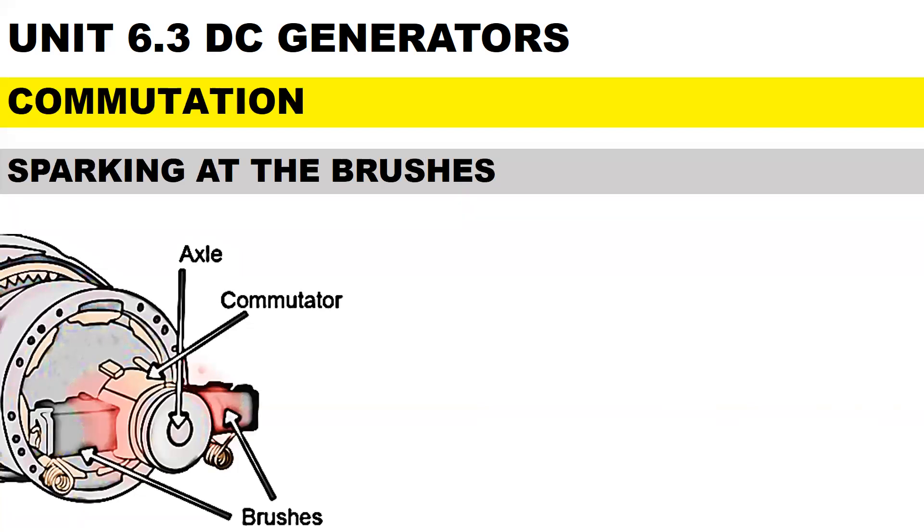To overcome the effects of commutation, we can use brush shifting, interpoles, and compensating windings.